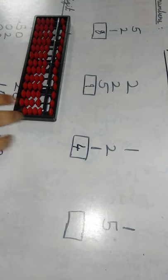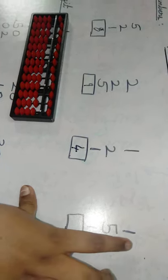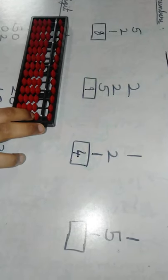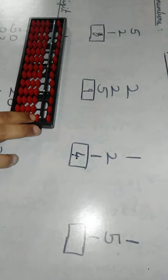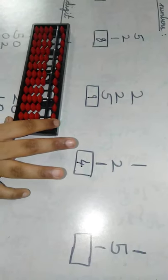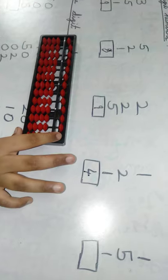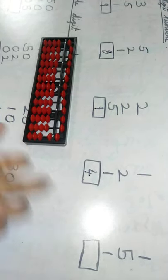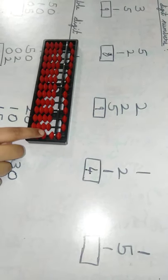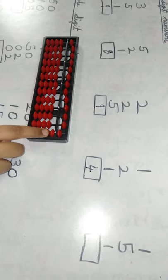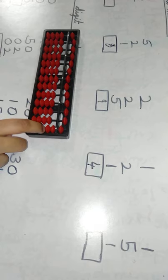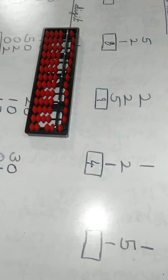Now let's go for the next problem. We should move one from the lower bead — that's 5. We should move the upper bead in the 1's column. Again 1 — we should move a lower bead in the 1's column. So 5 plus 1 is 6, and 6 plus 1 is 7. We have to write here 7.